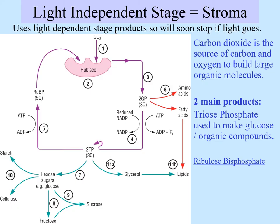So let's get into it. If we're looking at the light independent reaction or light independent stage, first of all the key basics — really important — is that it occurs in the stroma. That is the part of the chloroplast where this happens. If you remember, the light dependent reaction occurred in the thylakoids, and the stroma and thylakoids are right next to each other, so that's really important.